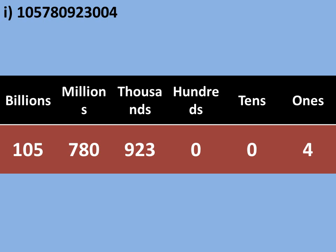Last one: number i, 105,780,923,004. We can say that this number is one hundred five billion, seven hundred eighty million, nine hundred twenty-three thousand, and four.